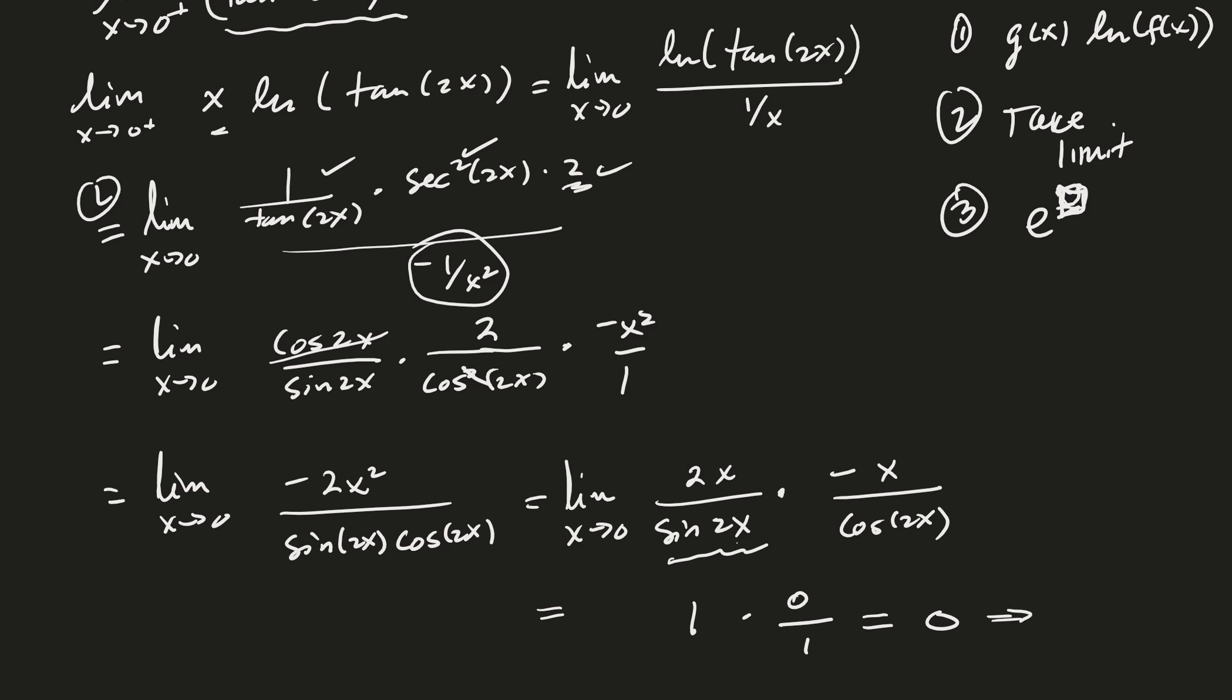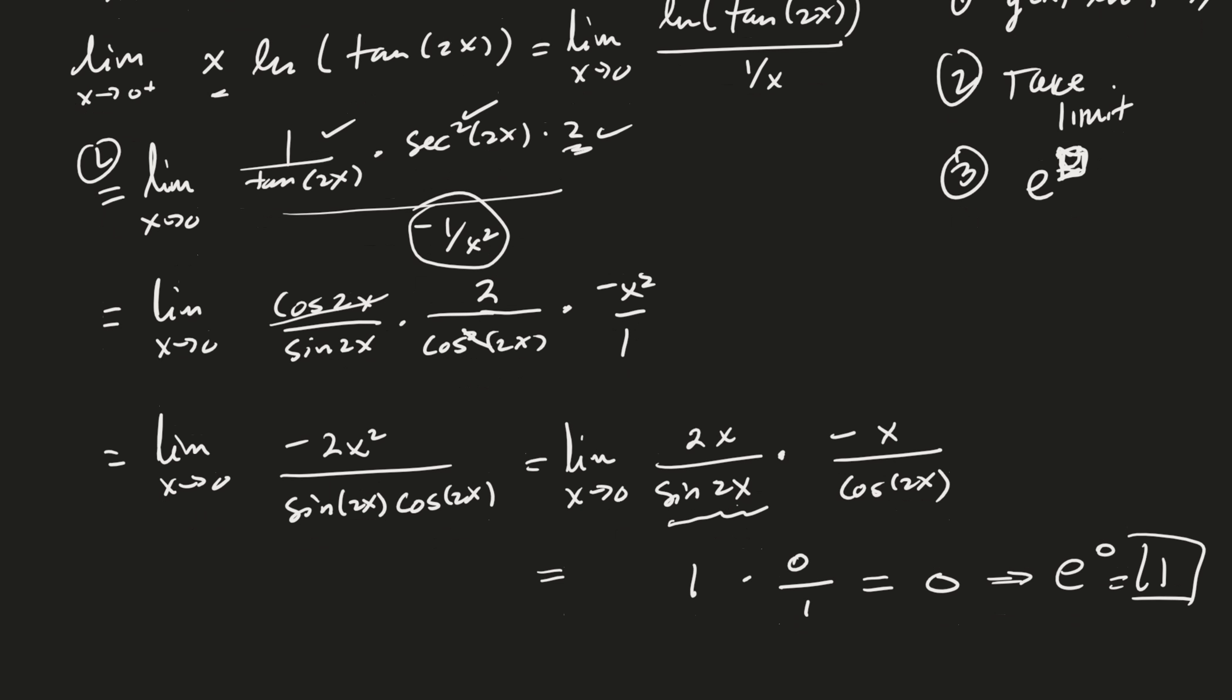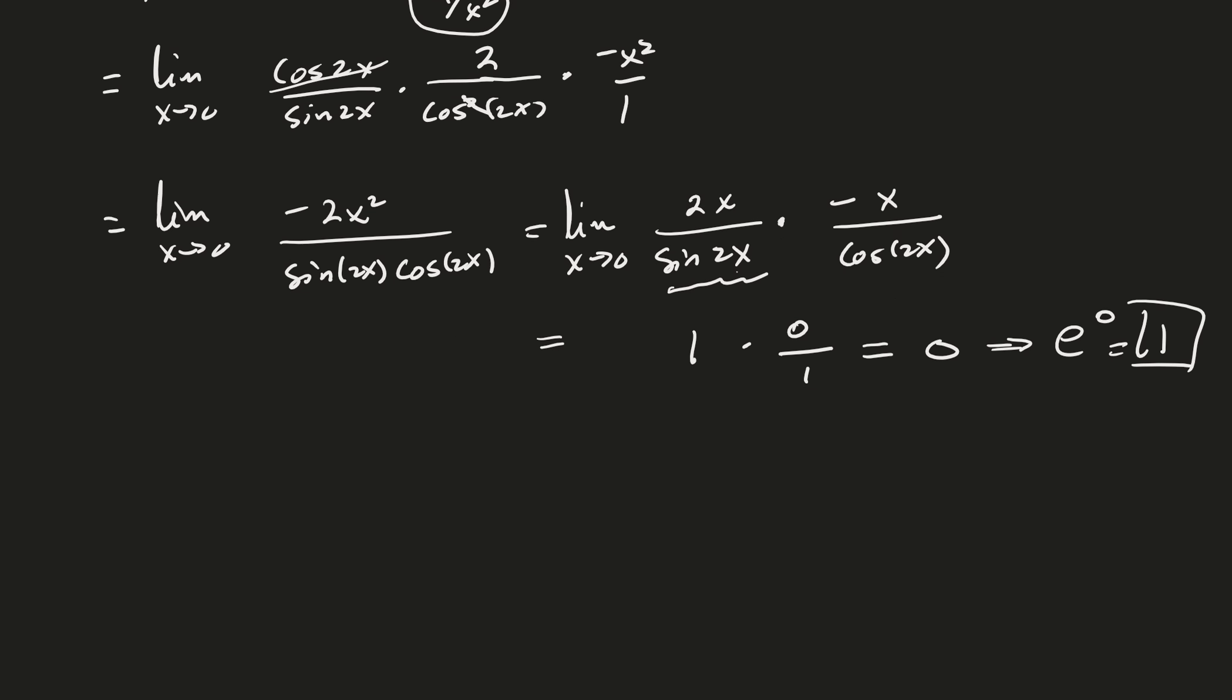So therefore my answer isn't 0, it's e to the 0, right? Which is 1. Very good. Okay, that was kind of fun. That was being tricky.